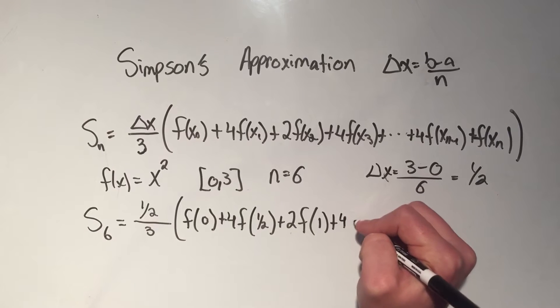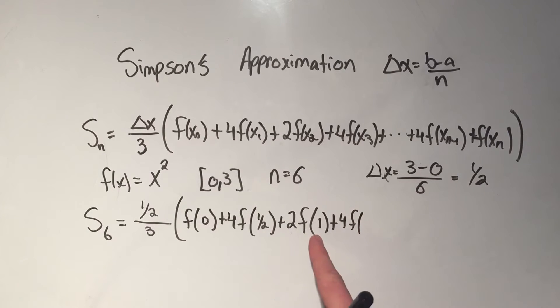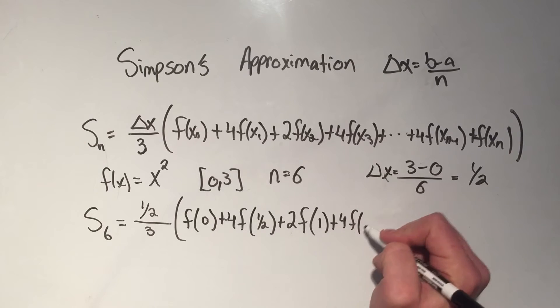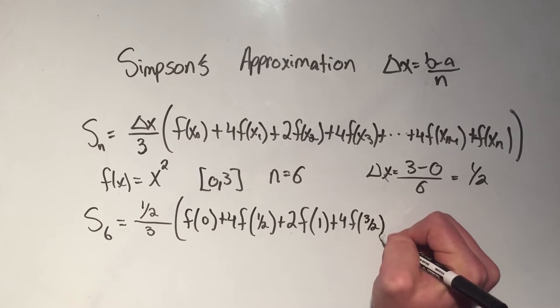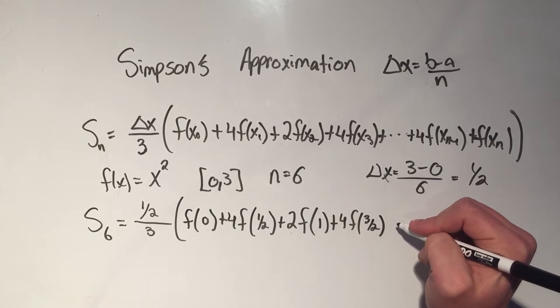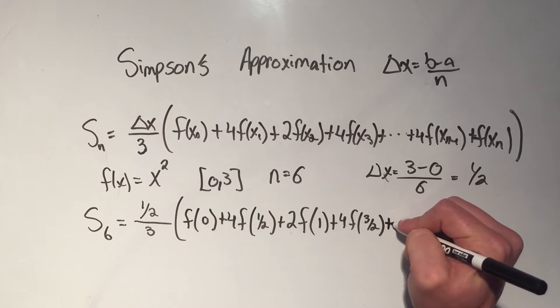4, 2, I'm back to 4. f of x3, how do I get from x2 to x3? I add a half. 1 plus a half is 3 halves. And this is very similar, again, if you've watched my other videos on the midpoint and trapezoid rule.